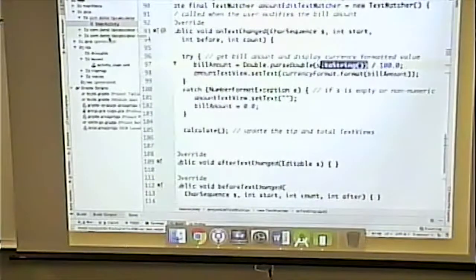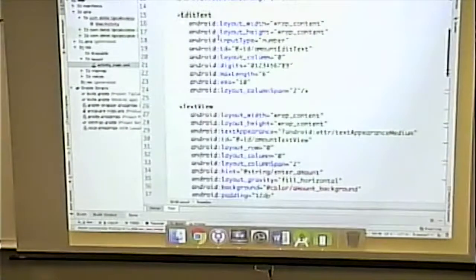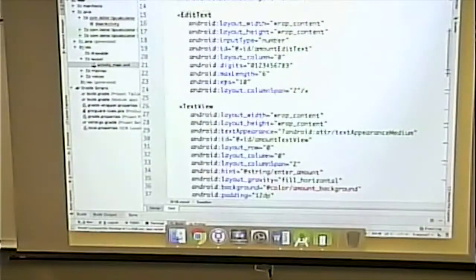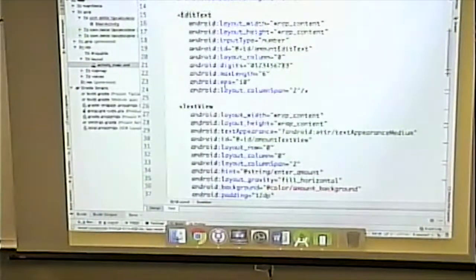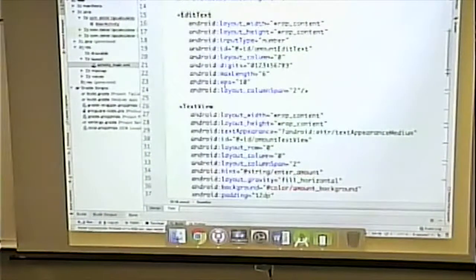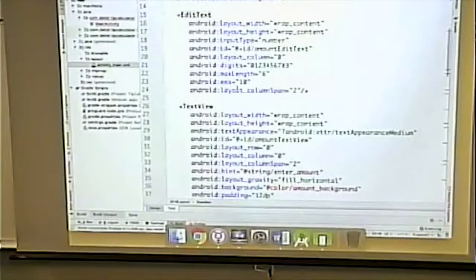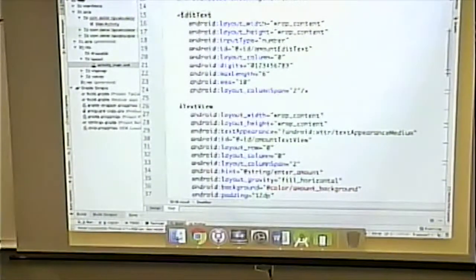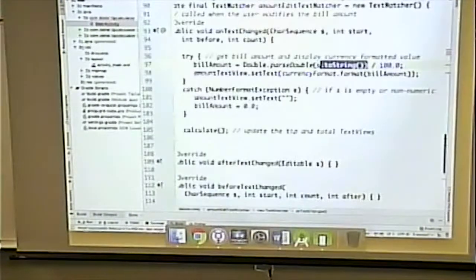Now the reason why we do that is, remember, that you're actually entering into this edit text field. We're entering in the numbers one, two, three, four. And it's automatically changing it if we type a one in to be .01, one, two, .012, one, two, three, one, point, two, three. It displays it as a currency in this field. And that's what this does.